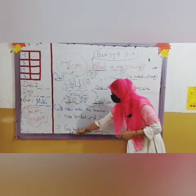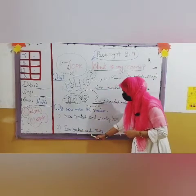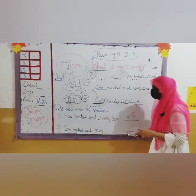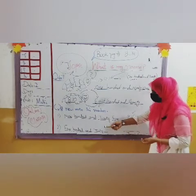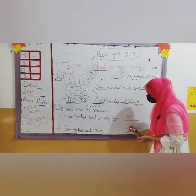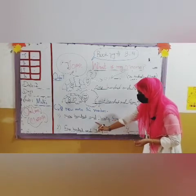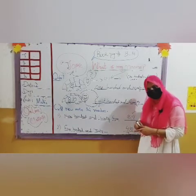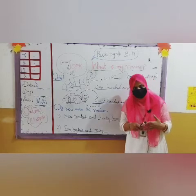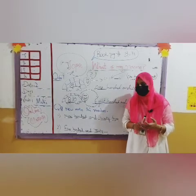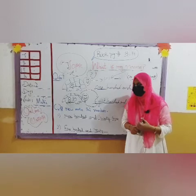Now come to question number 2: 430. You need to write this number in digits. The name will be there — four hundred and thirty. So you need to write 4, because it was 100 and 30, so you write 3 and 0. It is done. In question number 7, which is from book page number 13, you need to give the names on the numbers.